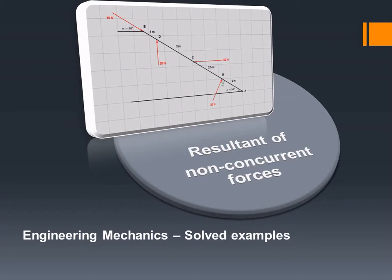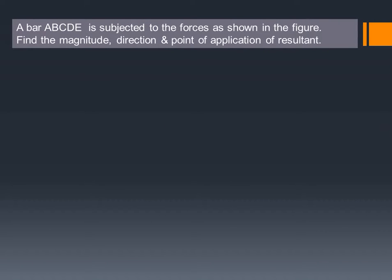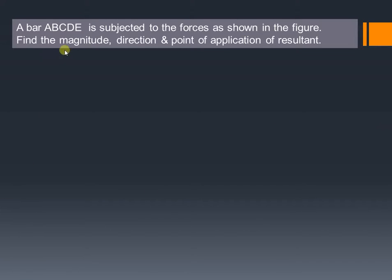Now let us try to understand how to find out the resultant of a non-concurrent force system. A bar ABCDE is subjected to the forces as shown in the figure, and we have to find out the magnitude, direction, as well as the point of application of the resultant.